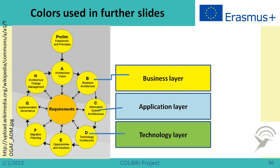I want to say something about colors in the Archi tool. There are specific colors used for different levels of architecture: yellow goes for business architecture, blue goes for the application level (which in TOGAF is called information systems architecture), and green goes for technology architecture.